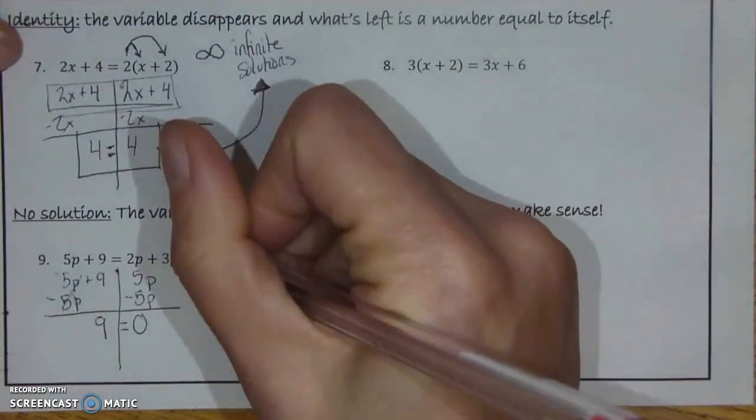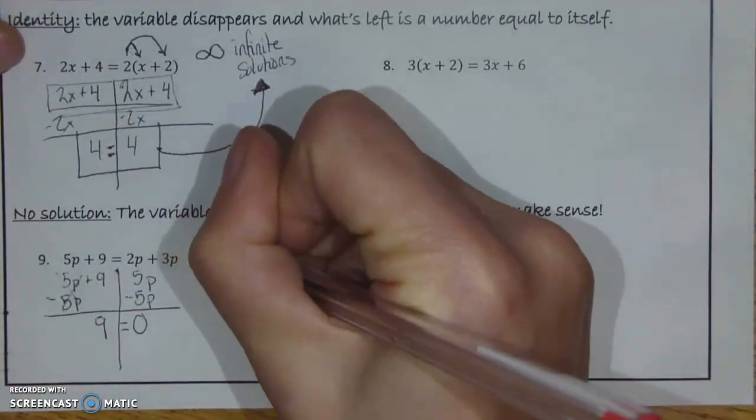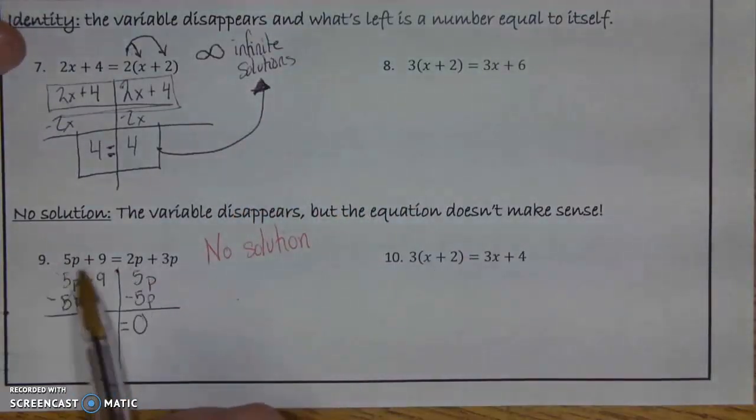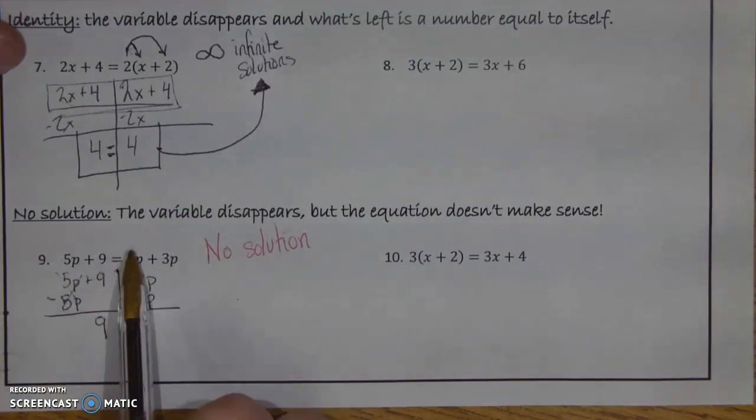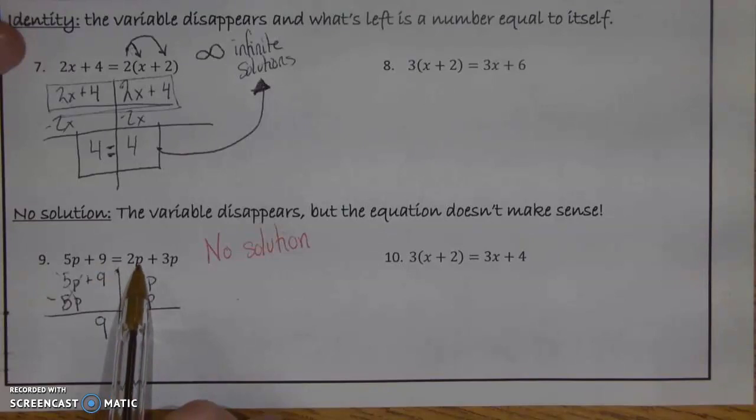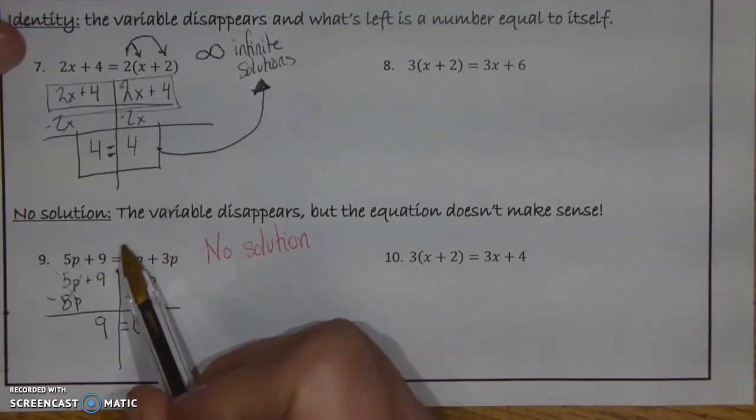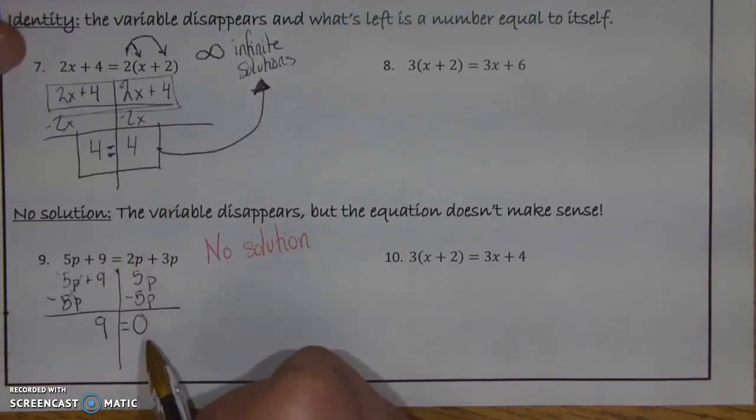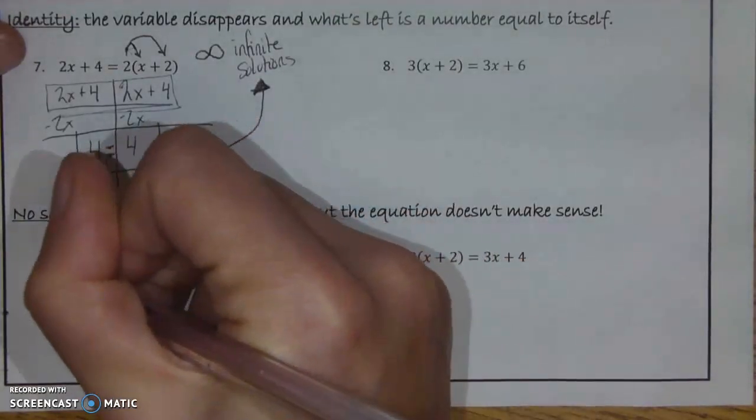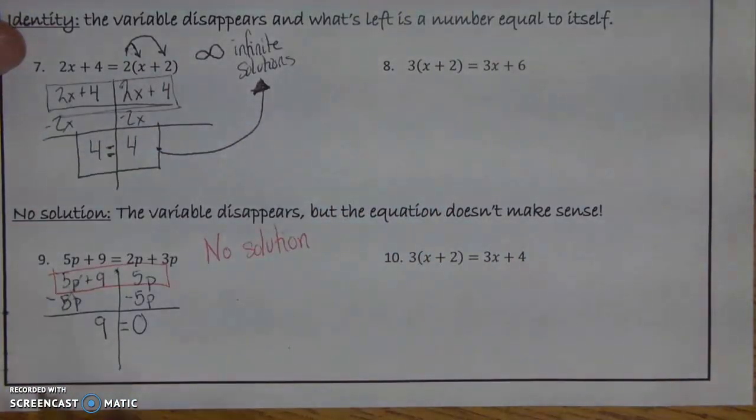So what this means is there is no possibility of a solution. And that's because you've put two things as equal to each other that it turns out are not ever going to be equal to each other. Just like 9 is never equal to 0, 5p + 9 will never be equal to 2p + 3p. So they made a false assumption and you're discovering it here through algebra. And if you look at like this middle step, it kind of makes sense that this will never work because you see how we have 5p on both sides?